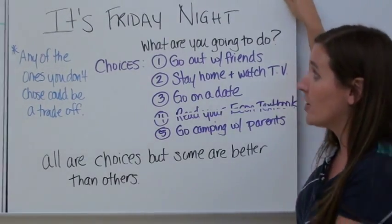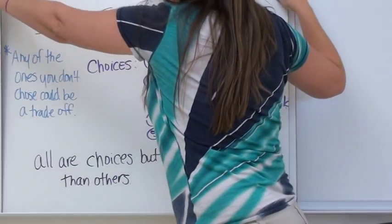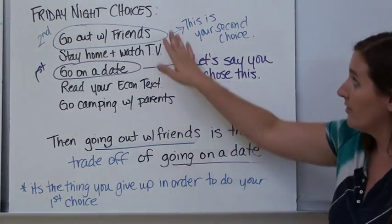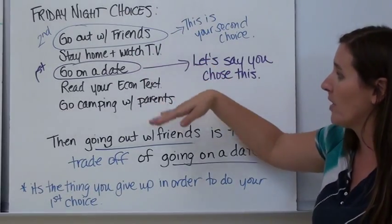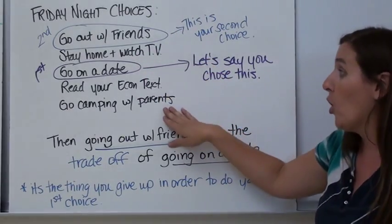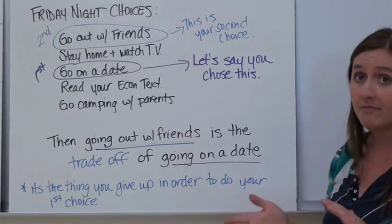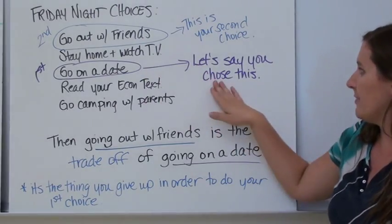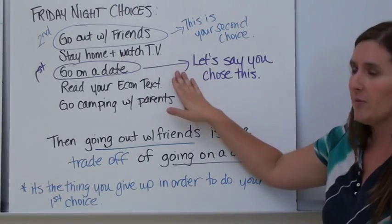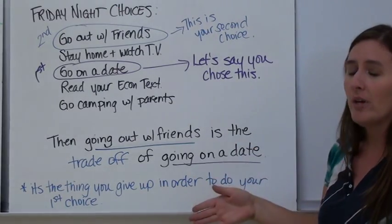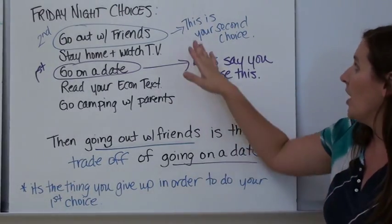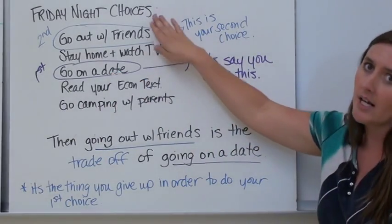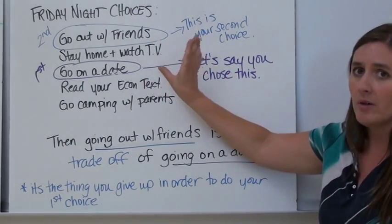A trade-off is the second choice that you give up. So again, Friday night — your choices are go out with friends, stay home and watch TV, go on a date, read your econ textbook, or go camping with friends. Let's say your first choice is going on a date. And then the second best choice you want to do is go out with friends. First choice: go on a date. Second choice: go out with friends.